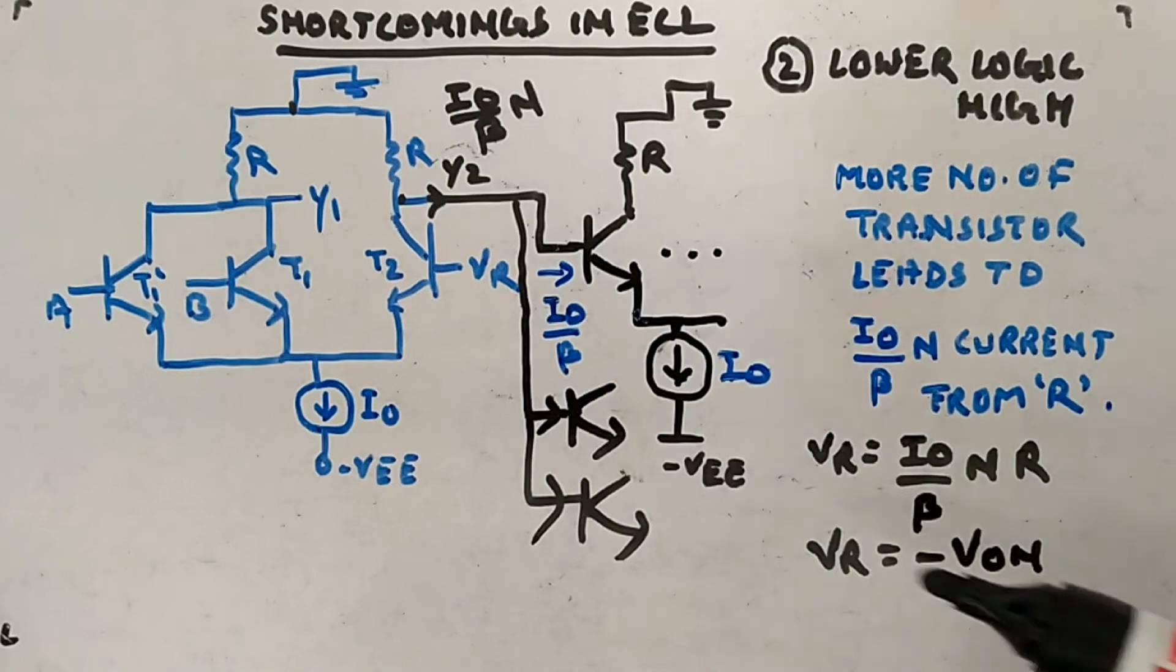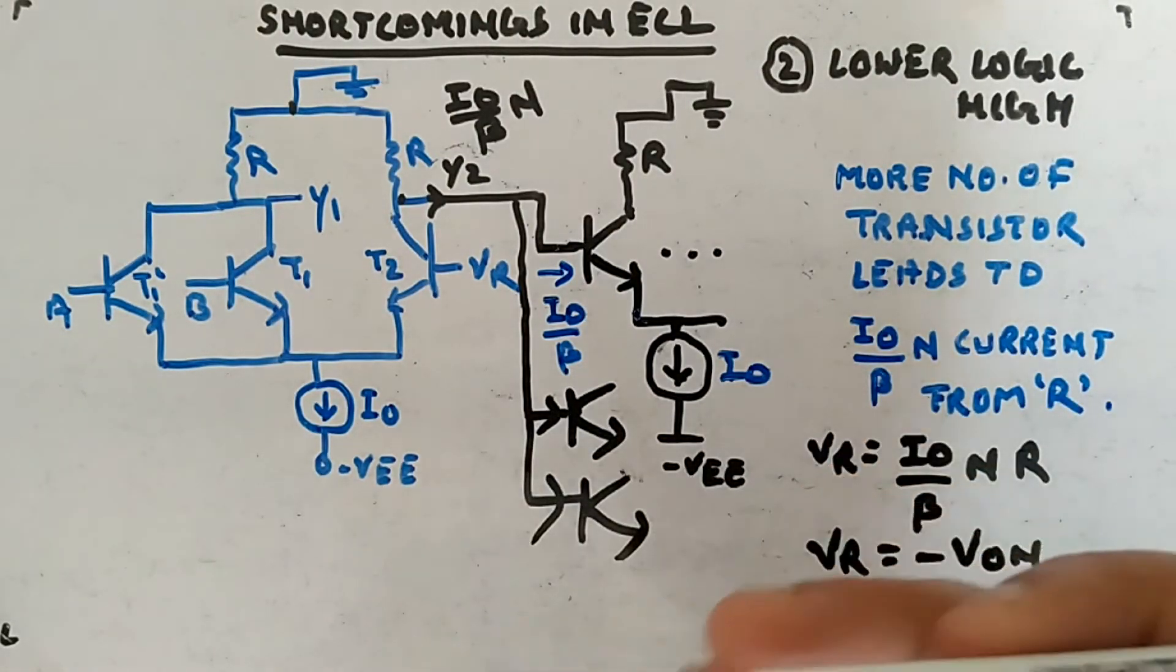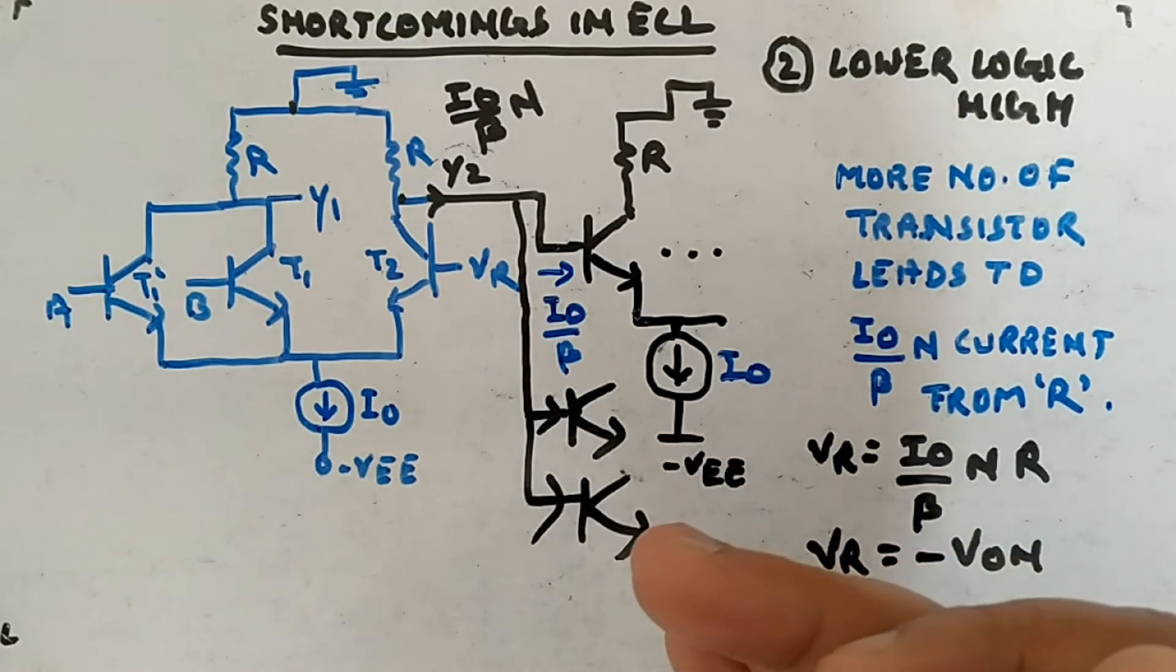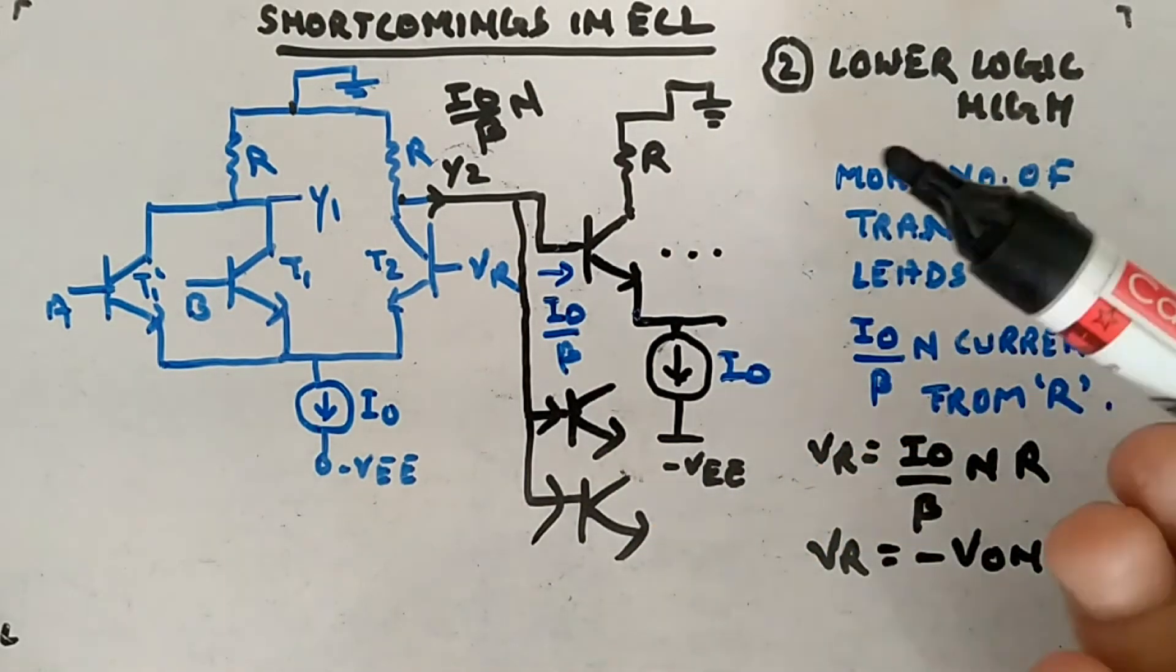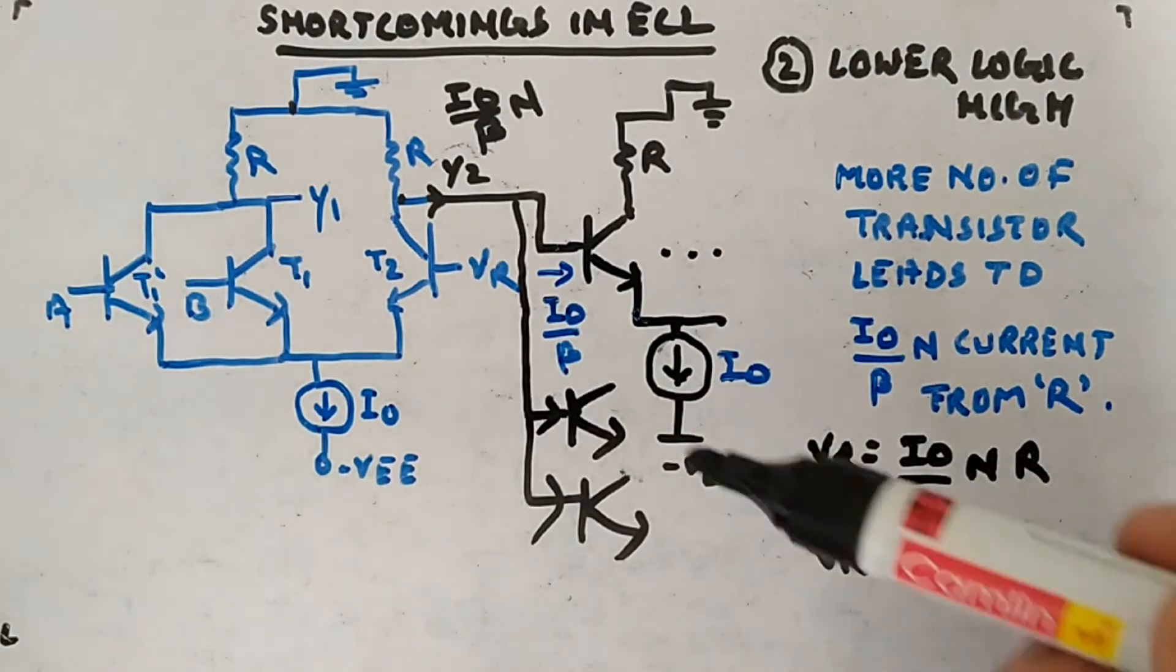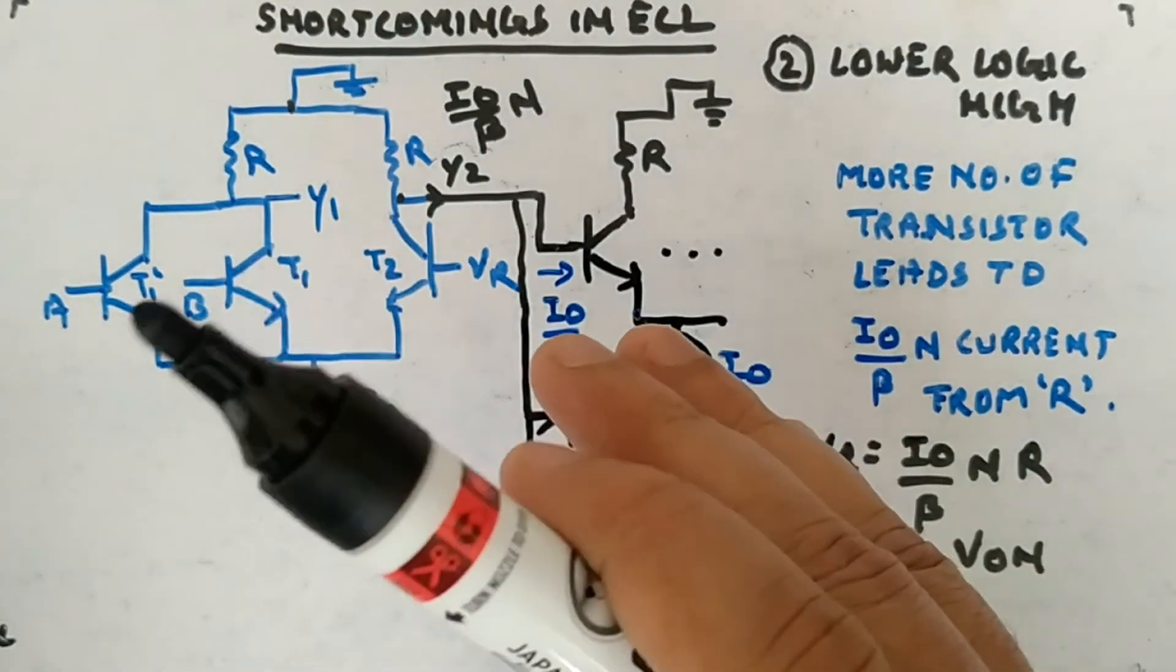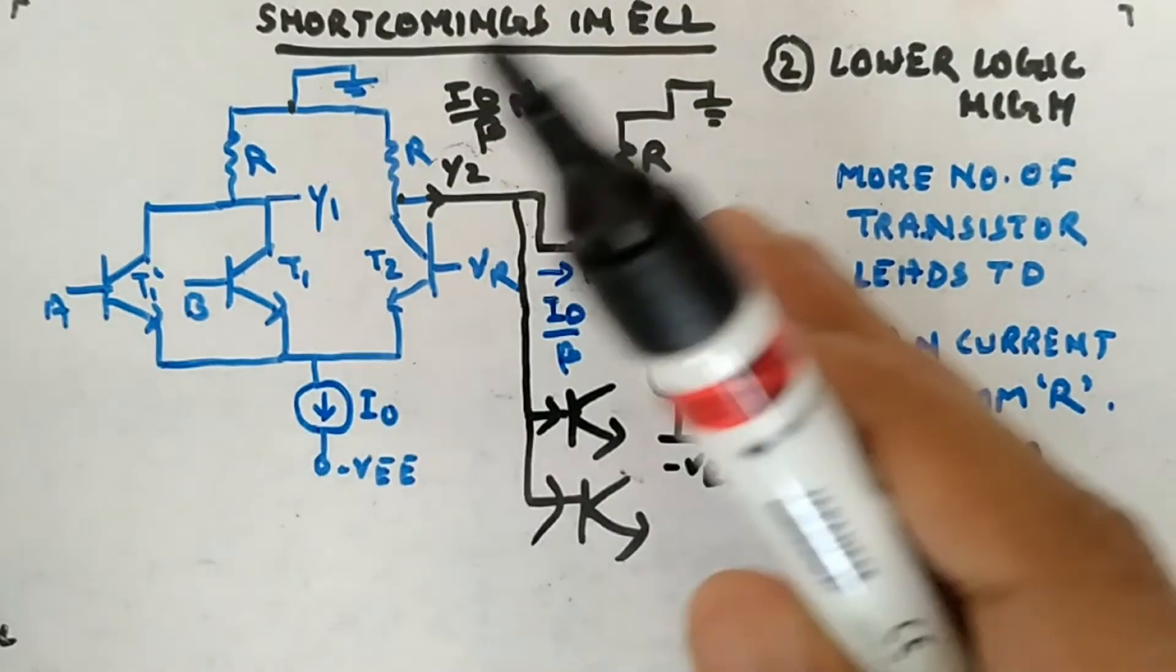It was VR equal to minus VON, but since you are driving more number of gates or transistors, it is lowering than that. What is the problem with this? If you lower the logic high, deliberately we keep the logic swing, the difference between logic 0 and logic 1, very less in high speed circuits.